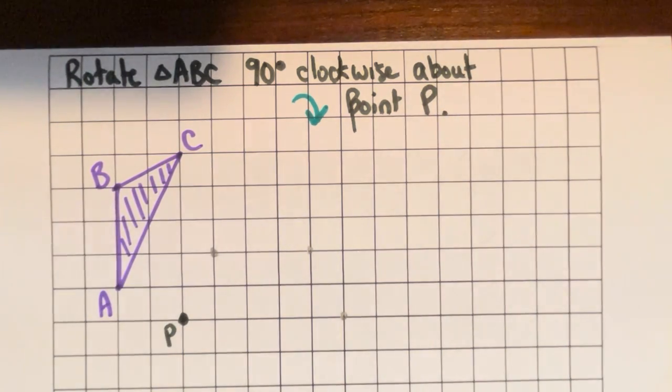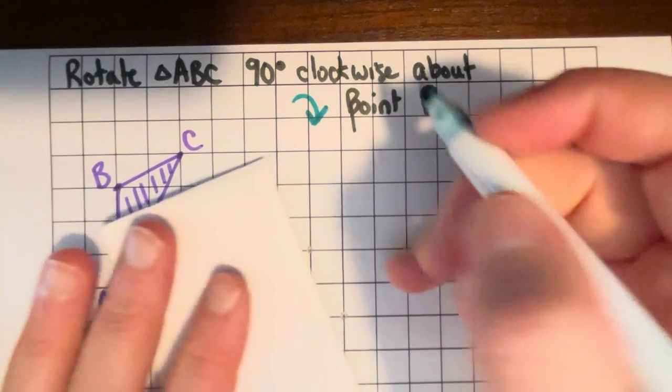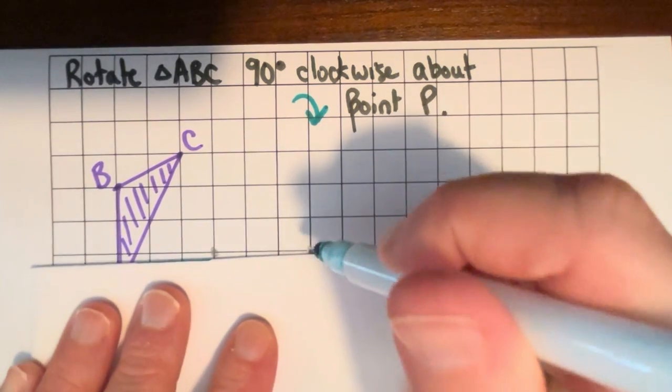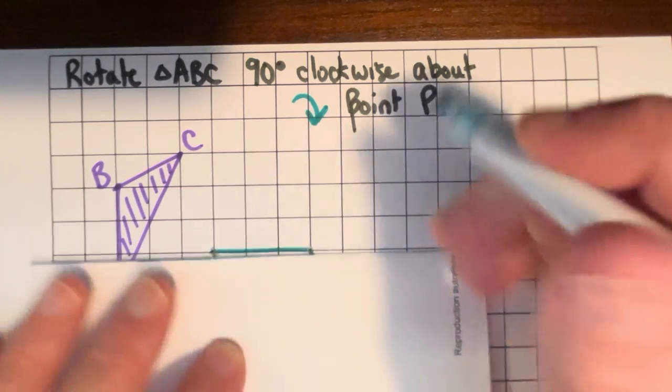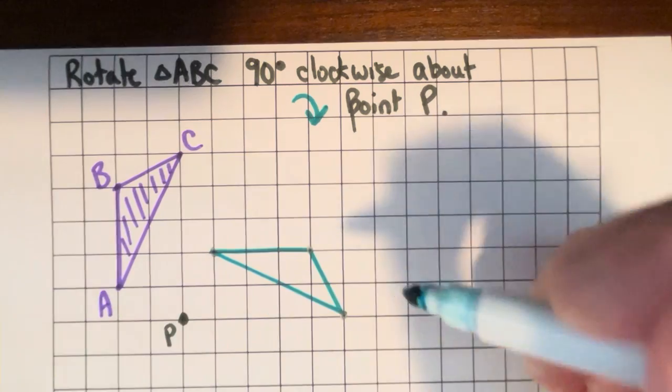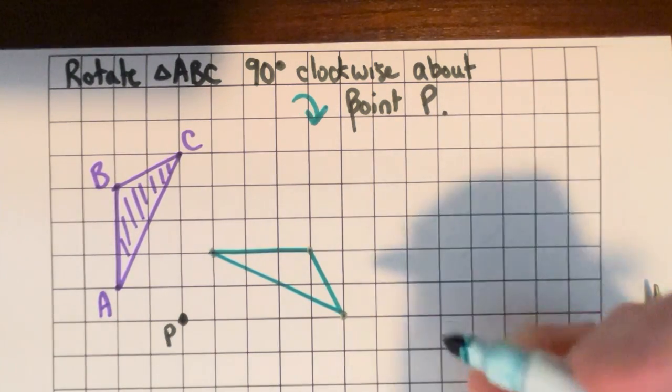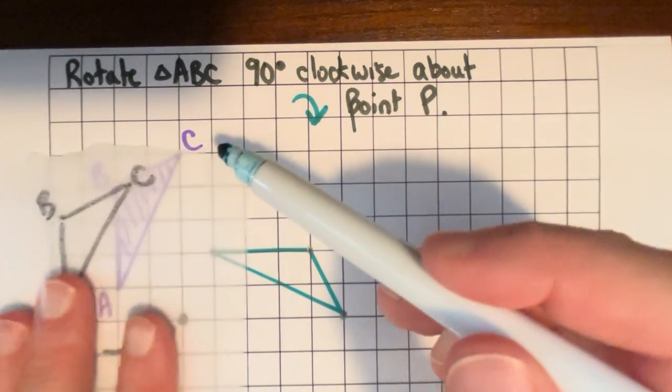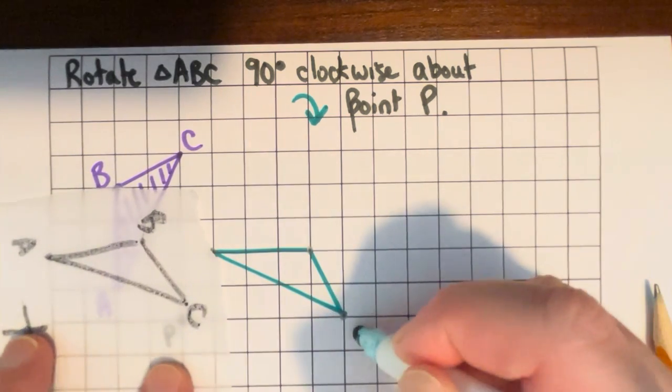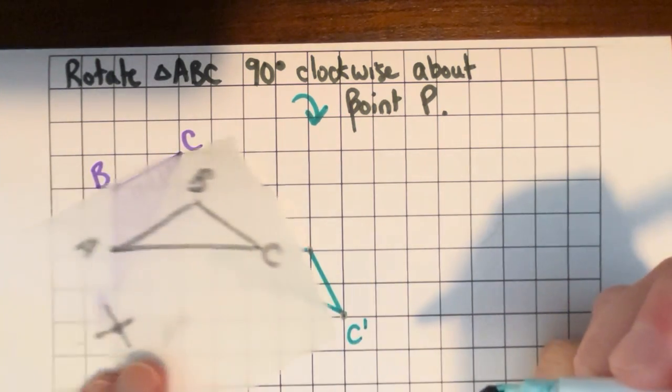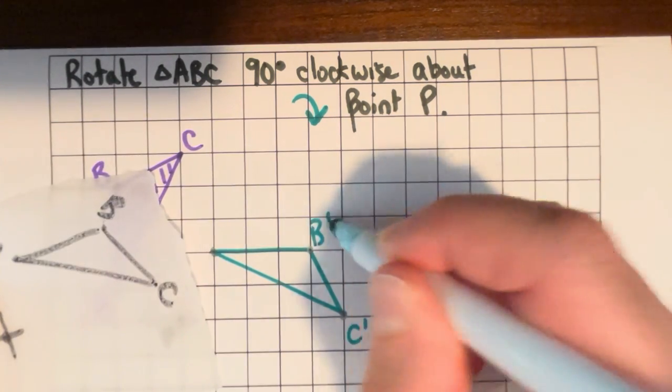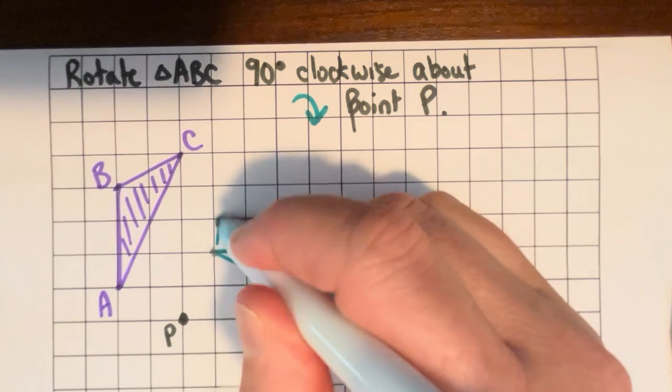and now I can take a straight edge or ruler or any other straight edge and trace these. And then I'm going to label them just to help people understand what's happened. So point C has swung around all the way to here. So that's going to be called C prime. It just means like where C is now. And point B is right here now. So that'll be B prime. And then A prime is right here.